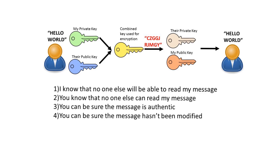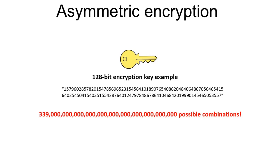Asymmetric encryption is far more secure than symmetric. The actual keys themselves tend to be very large random numbers — things which are very unlikely to be guessed. A typical 128-bit encryption key has an enormous number of possible combinations. Trying to guess it via brute force using current technology would still take significantly longer than the age of the universe to crack.